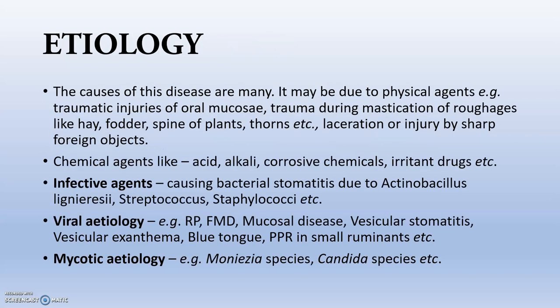Stoma is the opening of the mouth, and all these structures are present in the opening of the mouth, so all together it is known as stomatitis. Now the etiology — how is stomatitis happening? It may be due to traumatic injury on the oral mucosa, trauma during mastication, rough fodder, thorns, lacerations, or injury by sharp foreign objects.